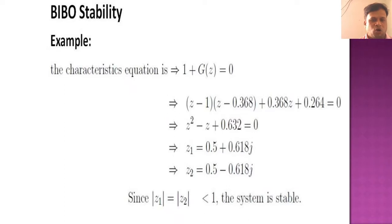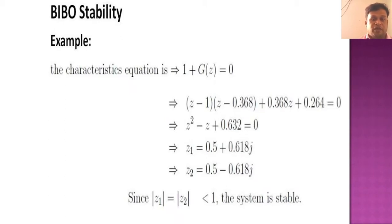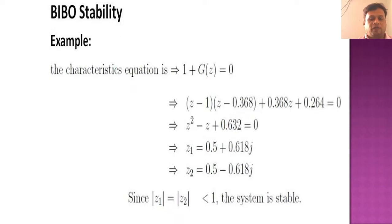Having found G(z) as C(z)/E(z), we now prove the stability of the system. After getting the characteristic equation by taking 1 plus G(z) equal to 0, we expand to get z² minus z plus 0.632 equal to 0. The complex roots are z₁ equal to 0.5 plus 0.618j and z₂ equal to 0.5 minus 0.618j from this quadratic equation.